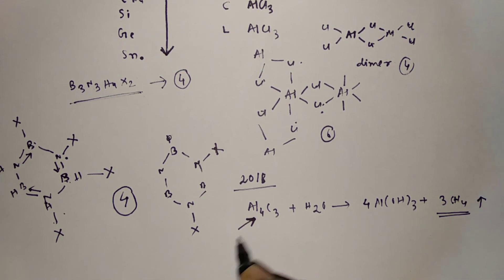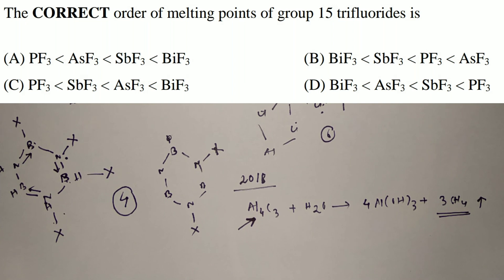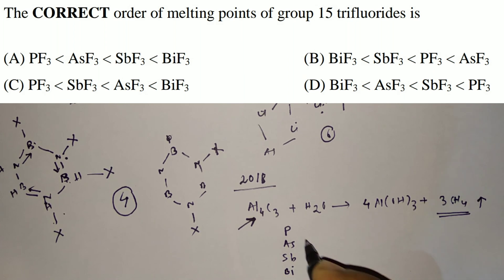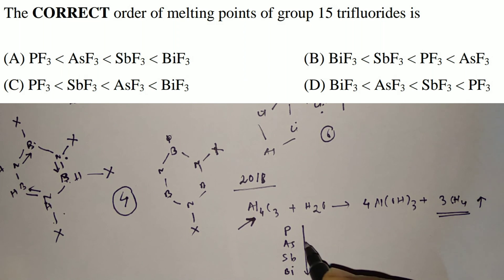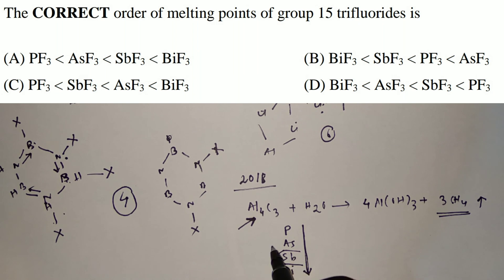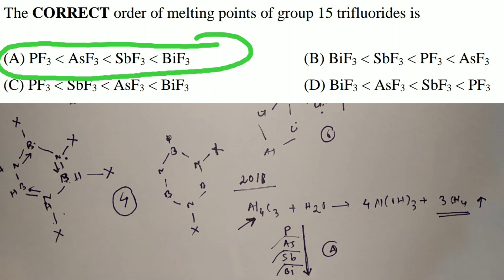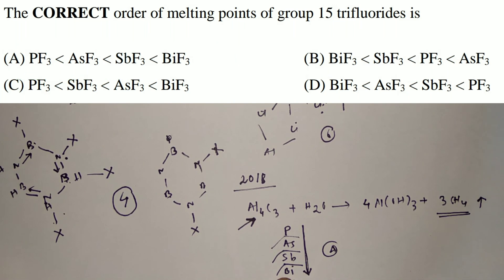The last question from JAM 2018 was the correct order of melting points of the trifluorides — phosphorus, arsenic, antimony, and bismuth trifluorides. From the periodic table you know that melting point and boiling point both increase from top to bottom in a group. That is why the corresponding compounds show the same trend, and the final answer is A — bismuth trifluoride has the highest melting point and phosphorus trifluoride has the lowest.